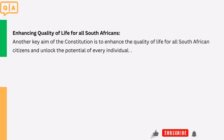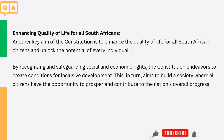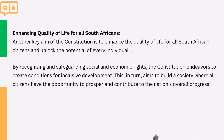3. Enhancing Quality of Life for All South Africans. Another key aim of the Constitution is to enhance the quality of life for all South African citizens and unlock the potential of every individual. By recognizing and safeguarding social and economic rights, the Constitution endeavors to create conditions for inclusive development. This, in turn, aims to build a society where all citizens have the opportunity to prosper and contribute to the nation's overall progress.